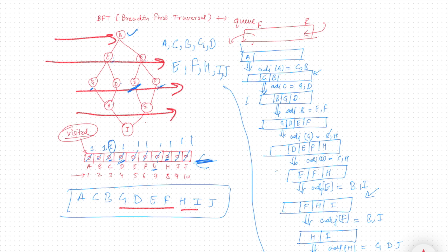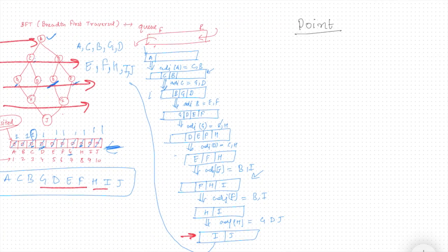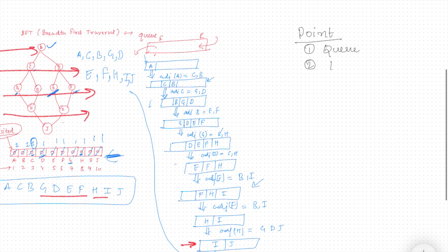We'll quickly note the points to remember for breadth first traversal. First, the data structure used in BFT is a queue — this has been asked many times in GATE. Second, breadth first traversal is also called level order traversal.